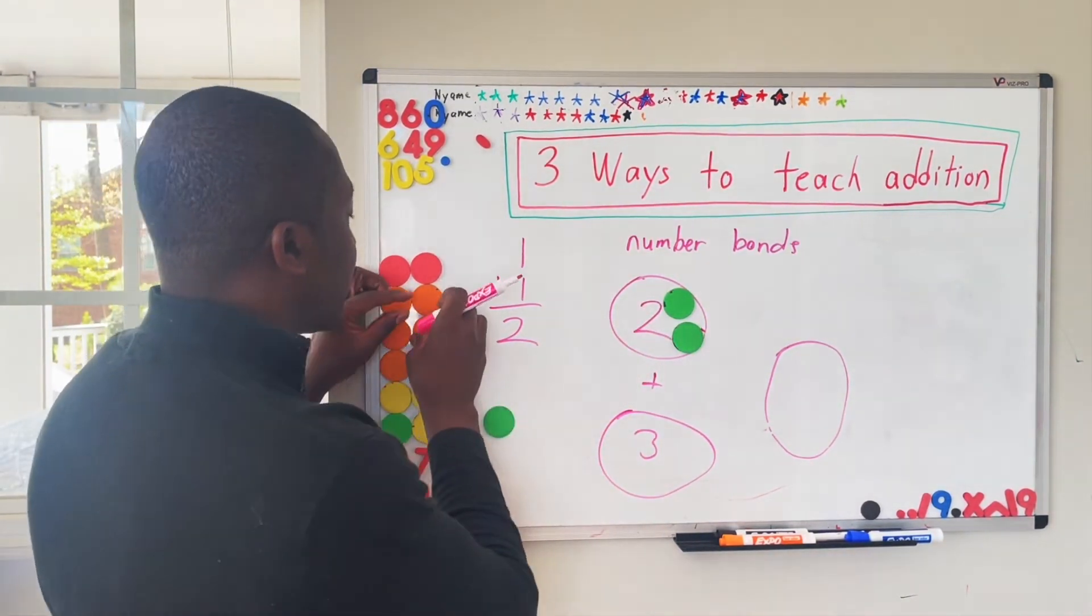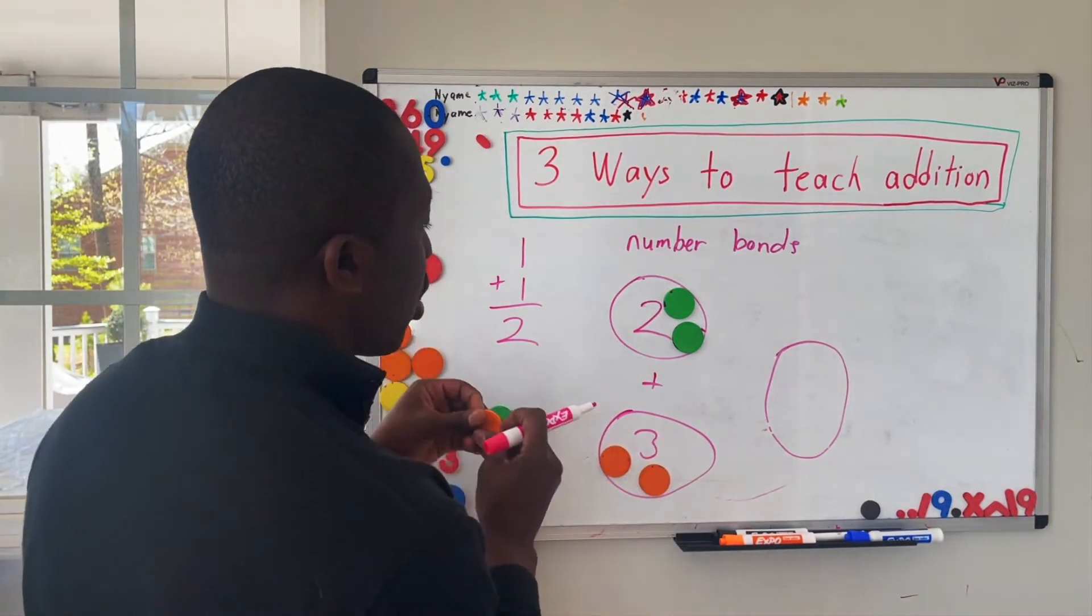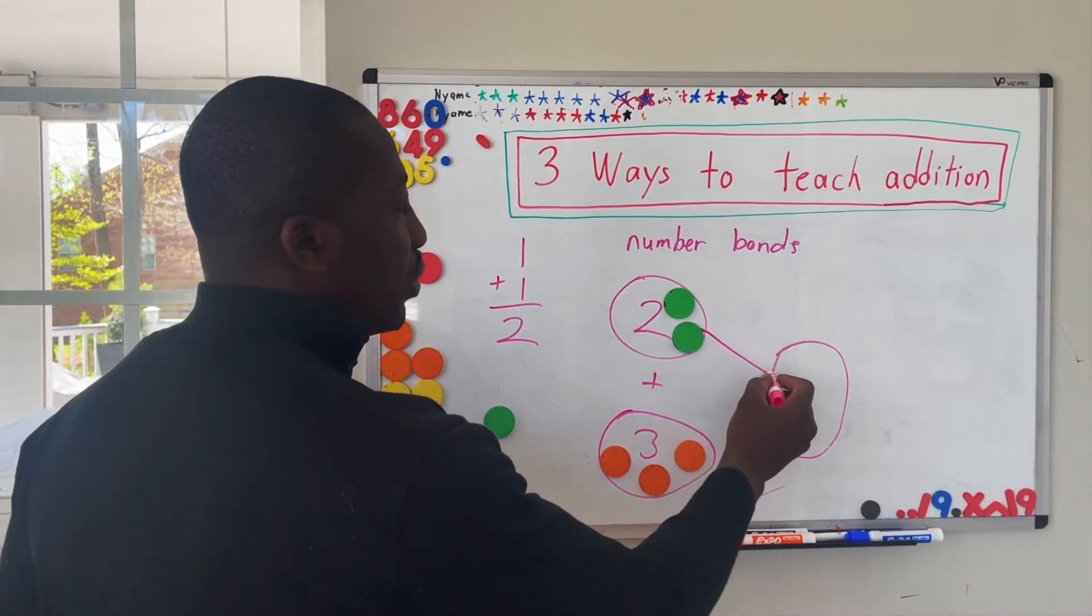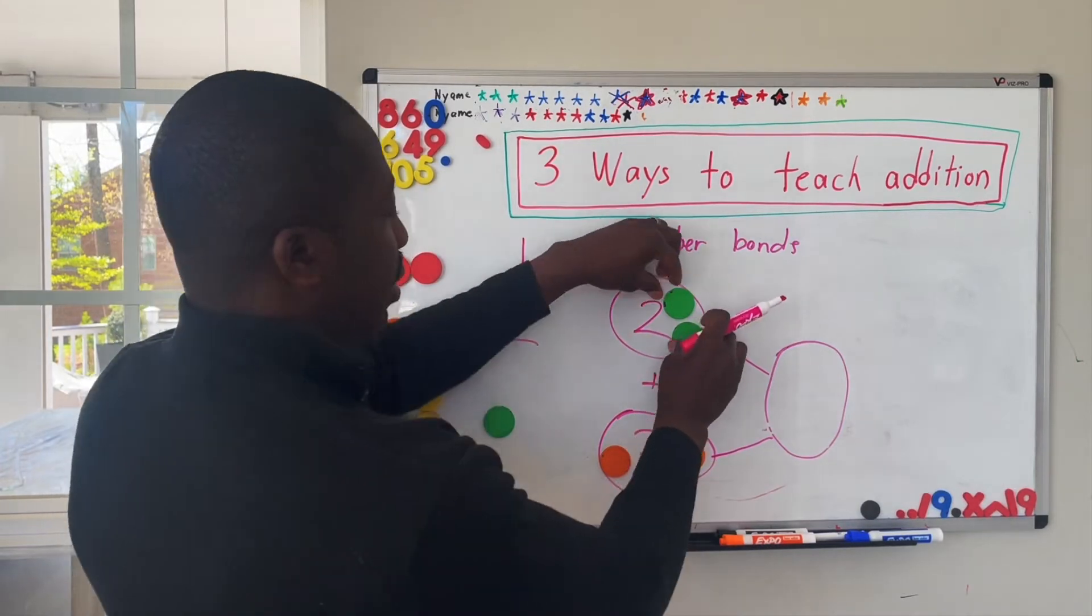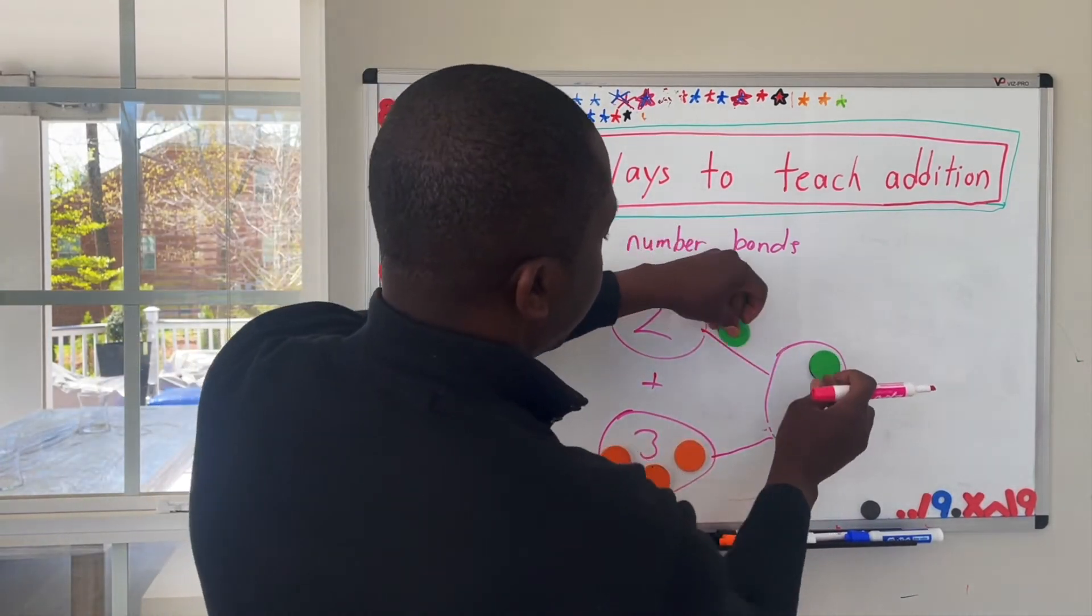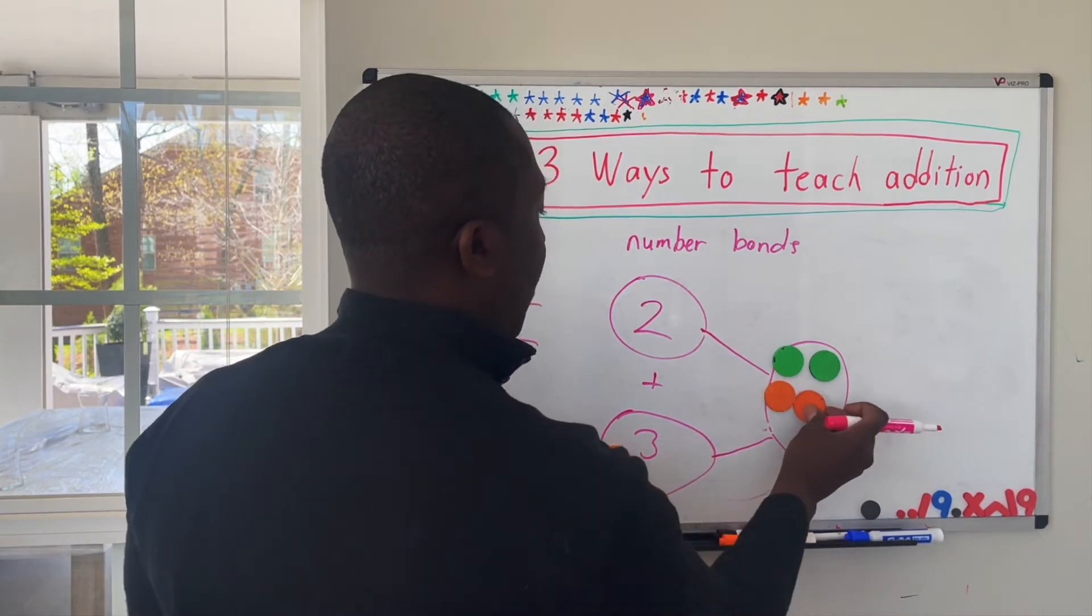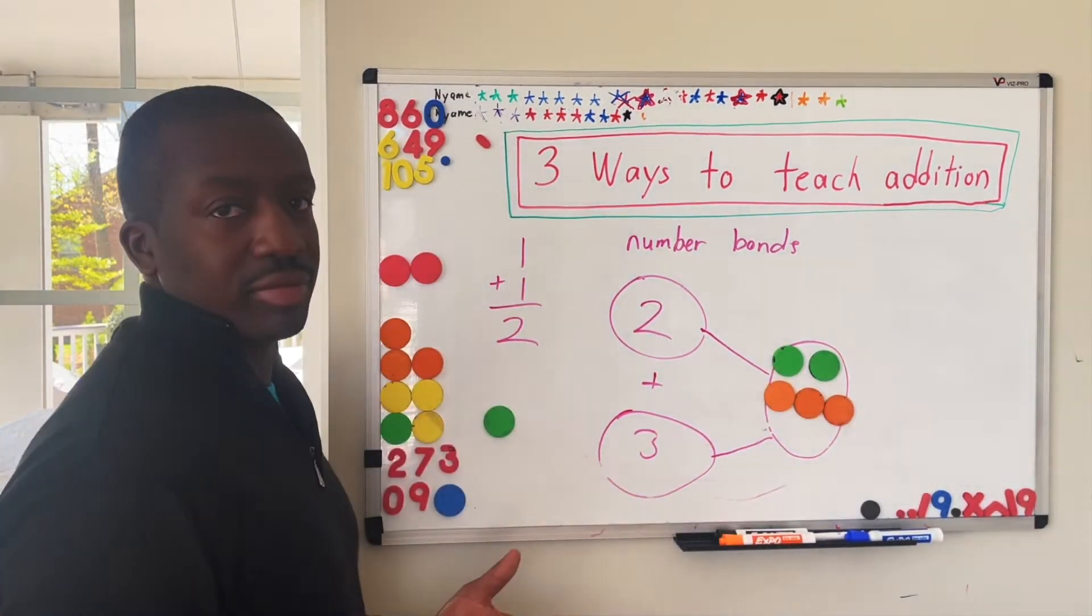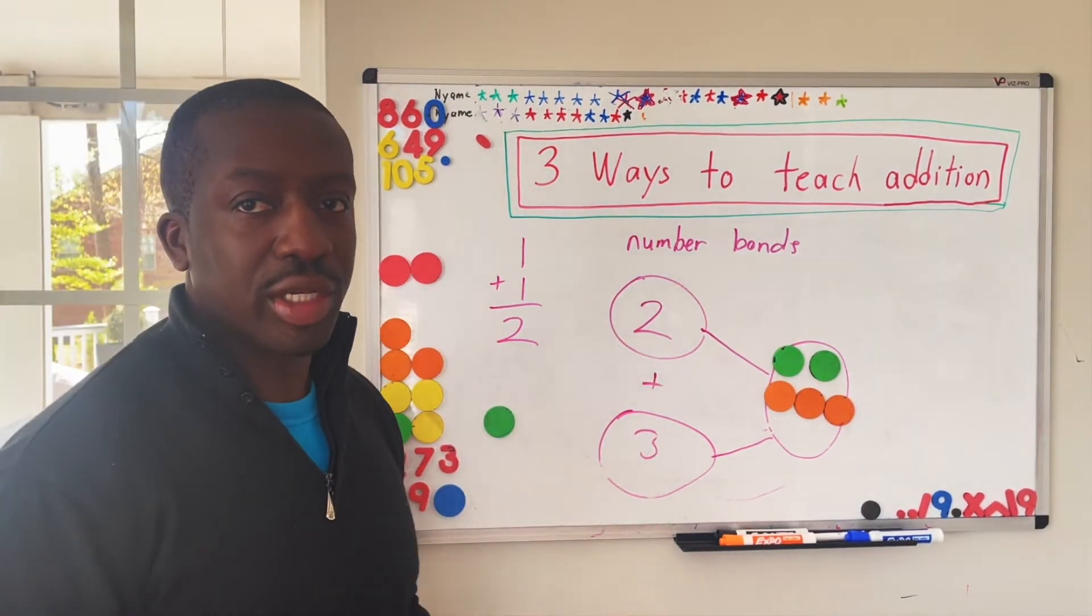Then I'd say, what number is this? And they would say three. I'd say, take three orange circles. I'd say now, if we move them together and put them in one big circle, what do you have? So this is two, and this is the three. And it equals five. So this is the number bonds method of teaching addition.